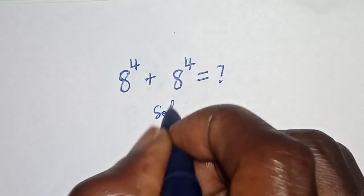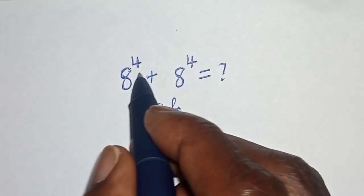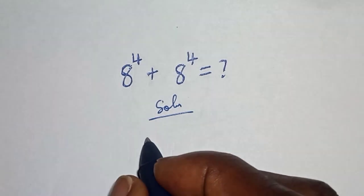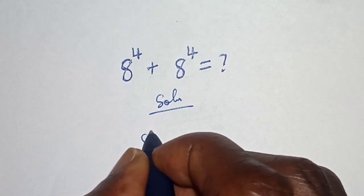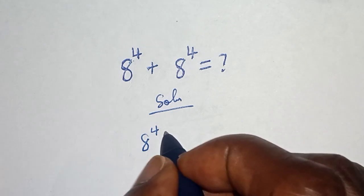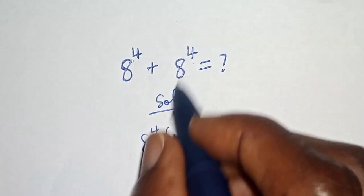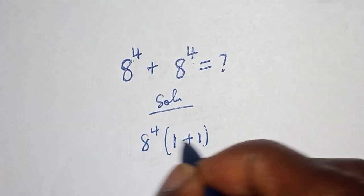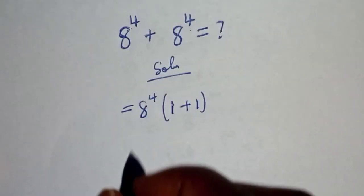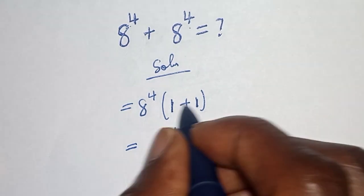Solution: If you look at this, 8 raised to power 4 is common. Let's bring it out. This divided by this is one, plus this divided by this is one. This is equal to 8 raised to power 4, bracket, 1 plus 1.